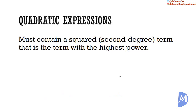A quadratic expression is an expression that contains a squared term as the term with the highest power. More specifically, for this lesson I will deal with factorization of expressions that simplify to ax squared plus bx plus c. That is, it has three terms: an x squared term, an x term, and one number written in this order, whether the coefficient is negative or positive.